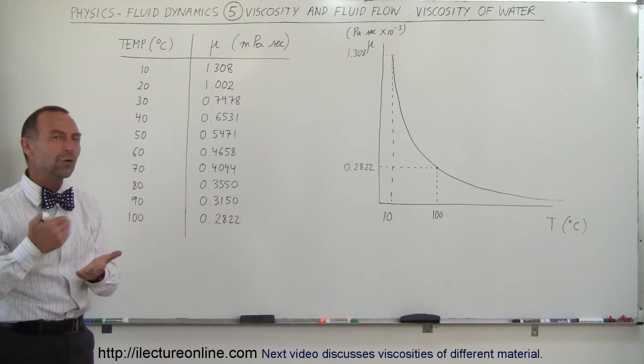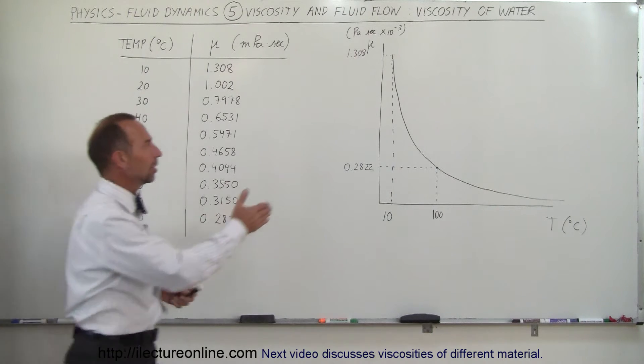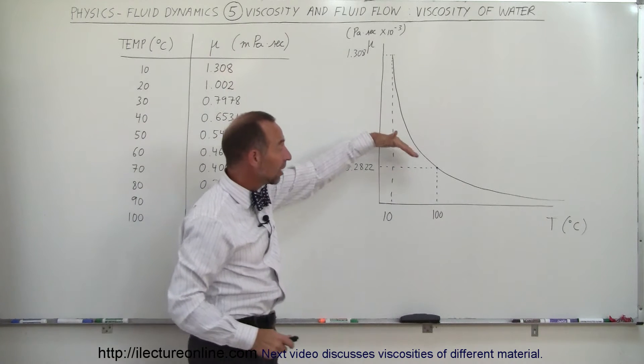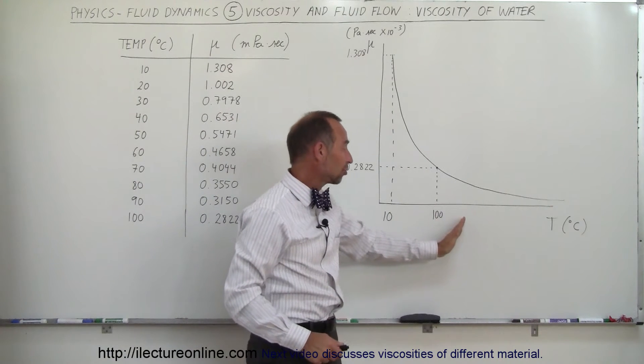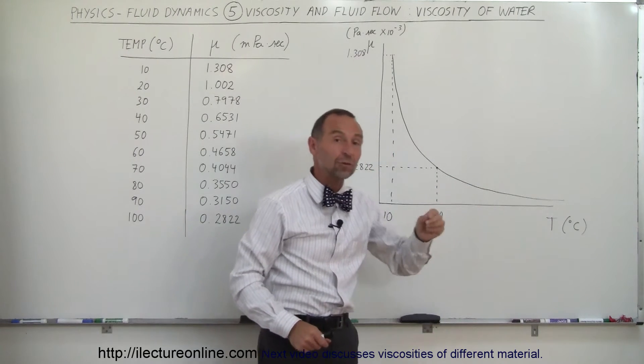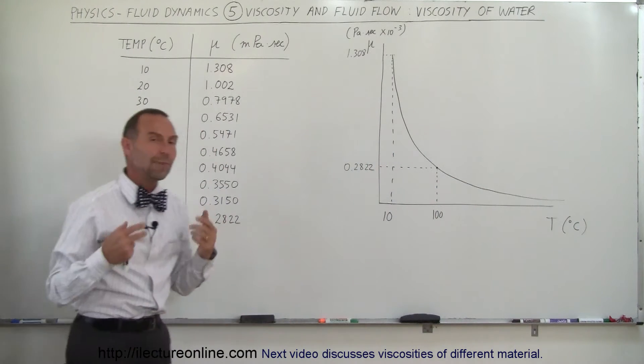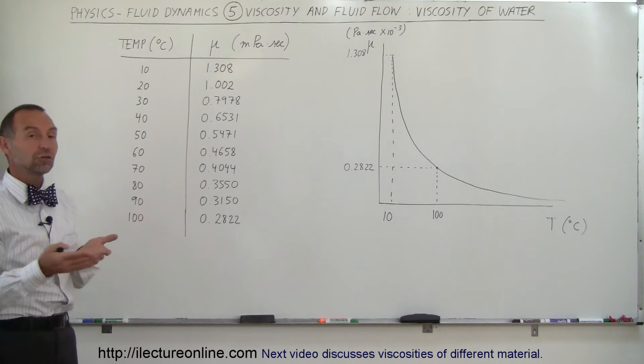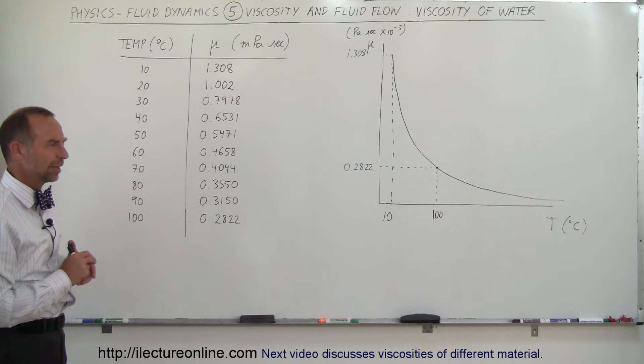You can see it's kind of like a 1 over x function, the typical curve of 1 over x. The viscosity continues to decline after water reaches temperatures higher than 100 degrees. When it's several hundred degrees, the viscosity gets rather small. There's a dramatic difference between the viscosity of water at very high temperatures versus very low temperatures.